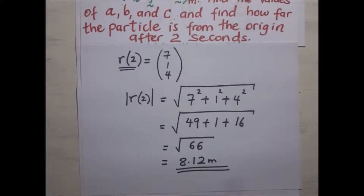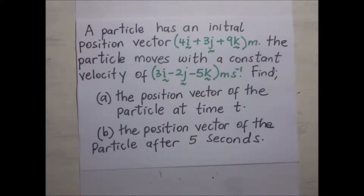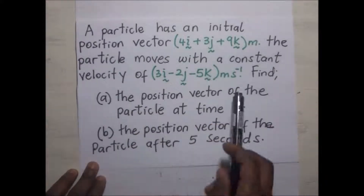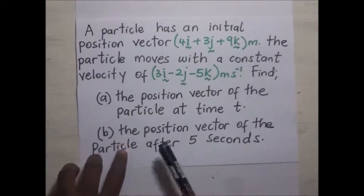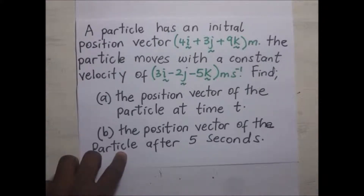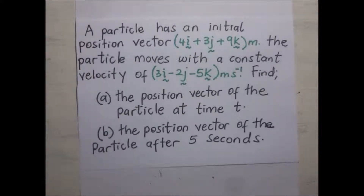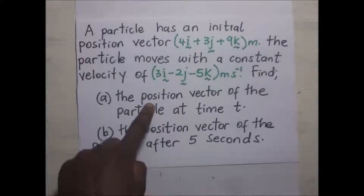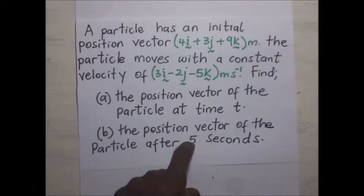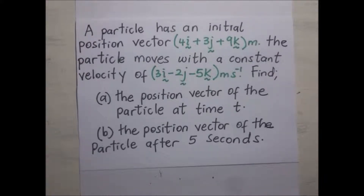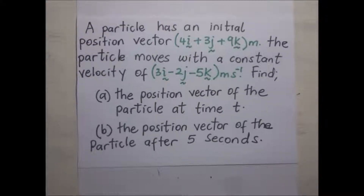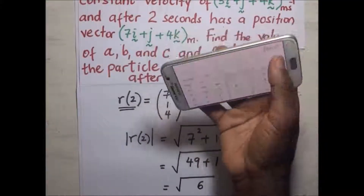You can try out the practice problem on the screen: a particle has an initial position vector in meters and moves with a constant velocity. Find the position vector after time t, and then the position vector after five seconds. For part a, you should get an expression such that substituting t equals 5 gives 19i minus 7j minus 16k as your final answer. Thanks for watching — feel free to check out other videos on the channel and don't forget to subscribe to Example Academy.